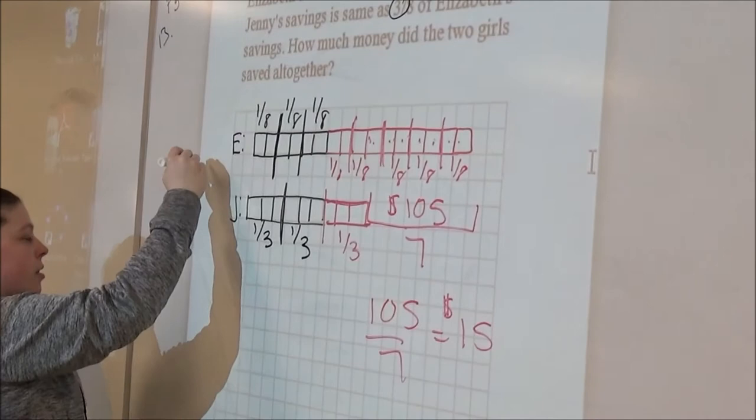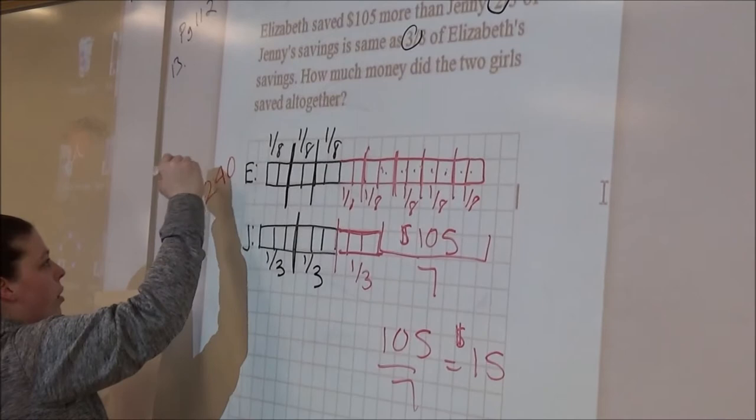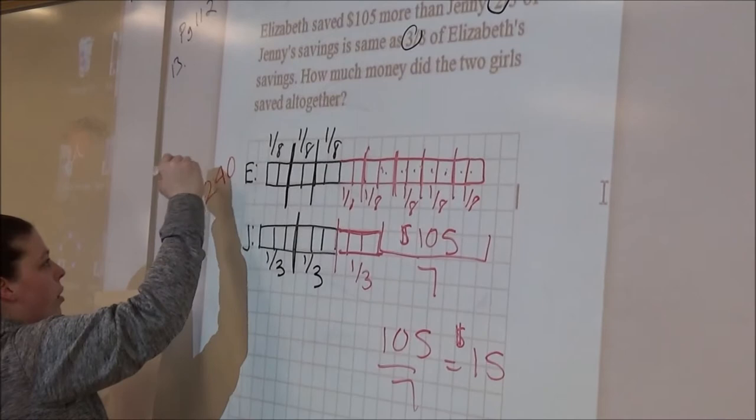It's basically $15 per box. Count the boxes. Elizabeth has 16 boxes at $15 a box. It's $240. And Jenny has nine boxes at $15 a box. It's $135. You can tell the difference is $105.